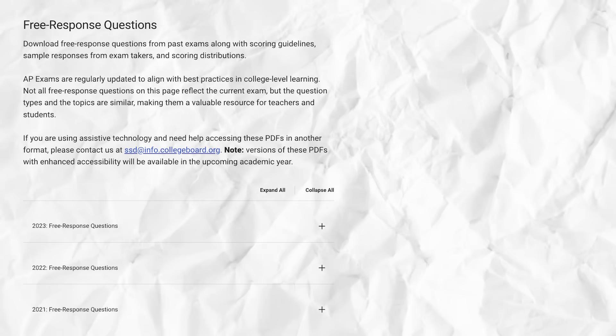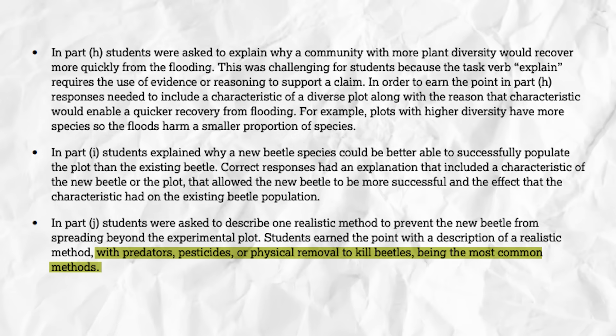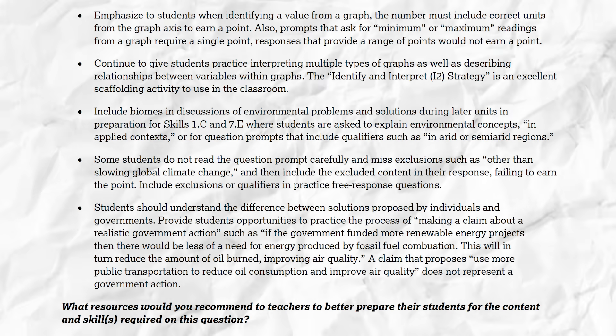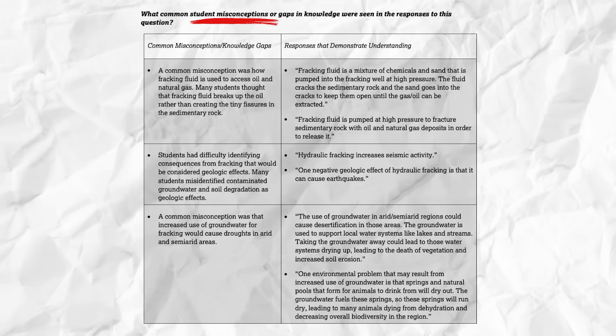This is simple to do because for the 2021 through 2023 exams, the FRQs are always in the same order: one is always experimental design, two is always the environmental solution, and three is always the math or calculation-based question. You can also read the chief reader report for released FRQs to learn about trends and mistakes to avoid — like not being specific enough about government actions that can solve environmental problems, or misconceptions like the idea that increased use of groundwater leads to droughts. Getting familiar with the FRQ format lets you focus your time on points you're most likely to earn and gives you a sense of calm when you open that answer booklet.